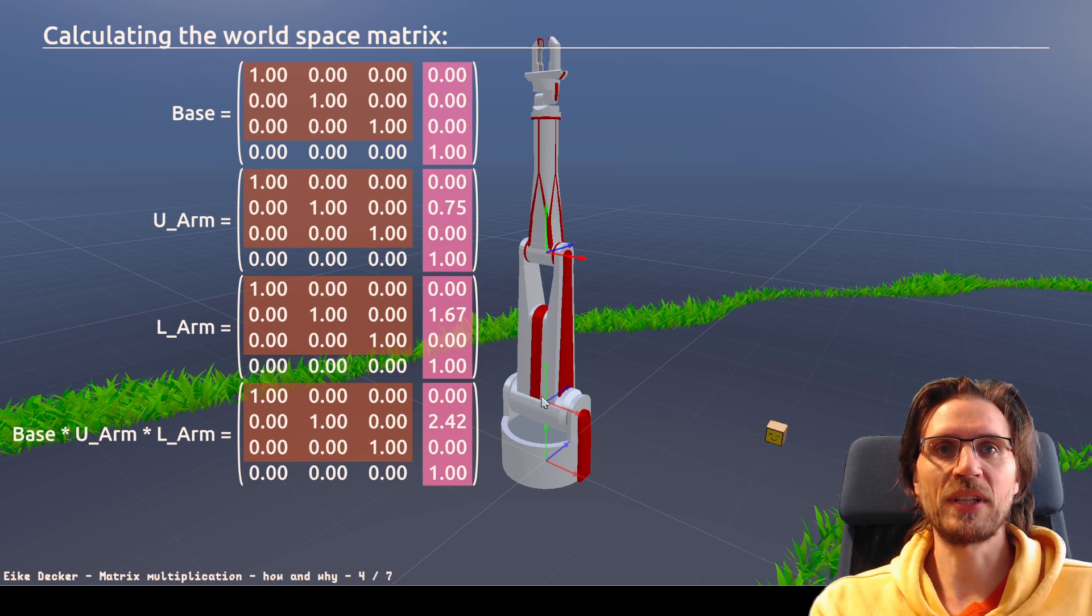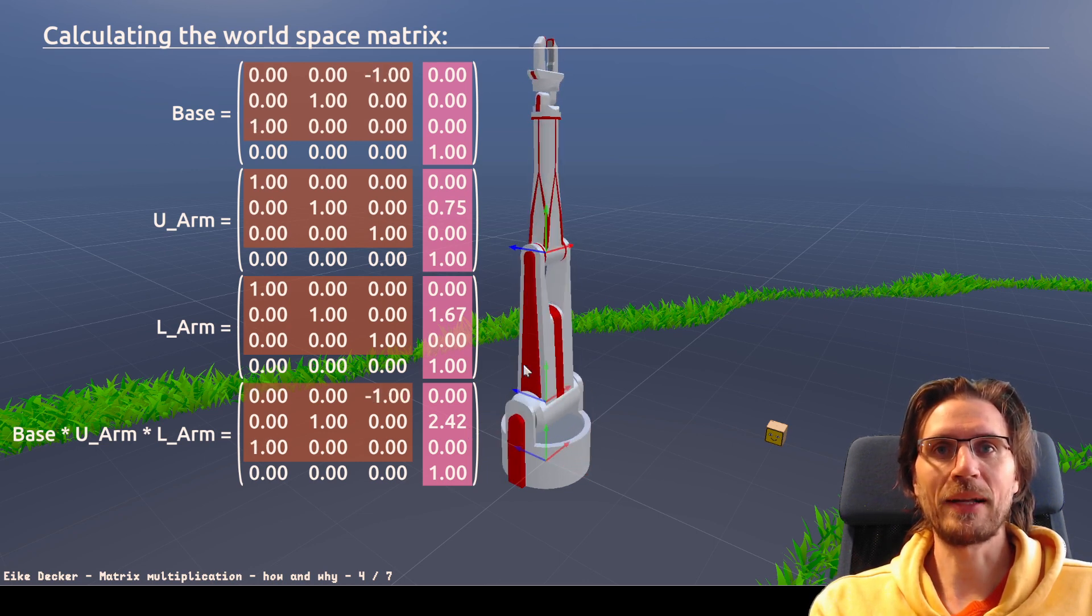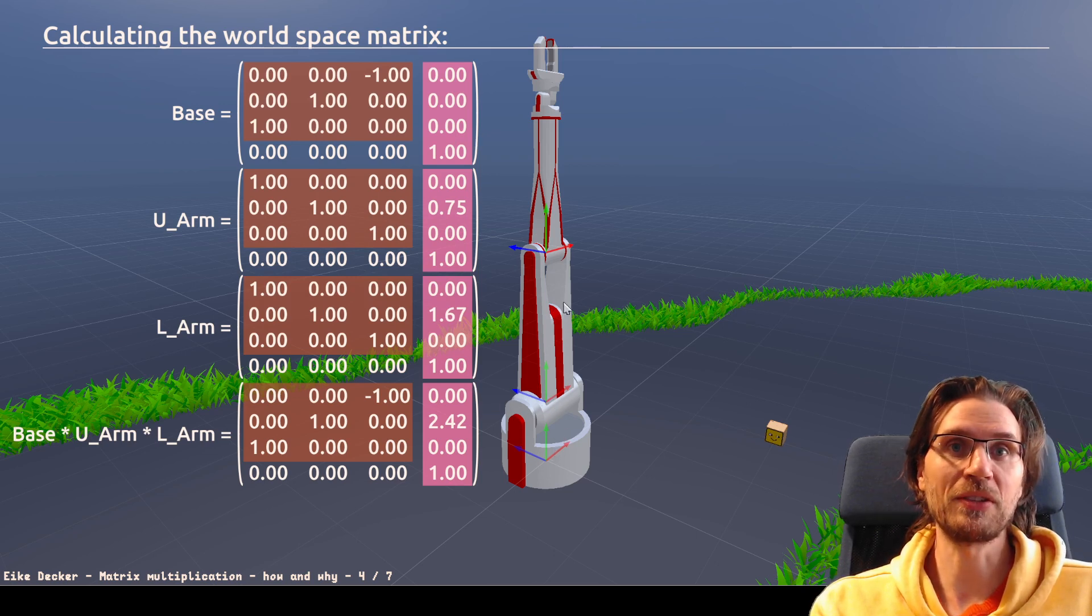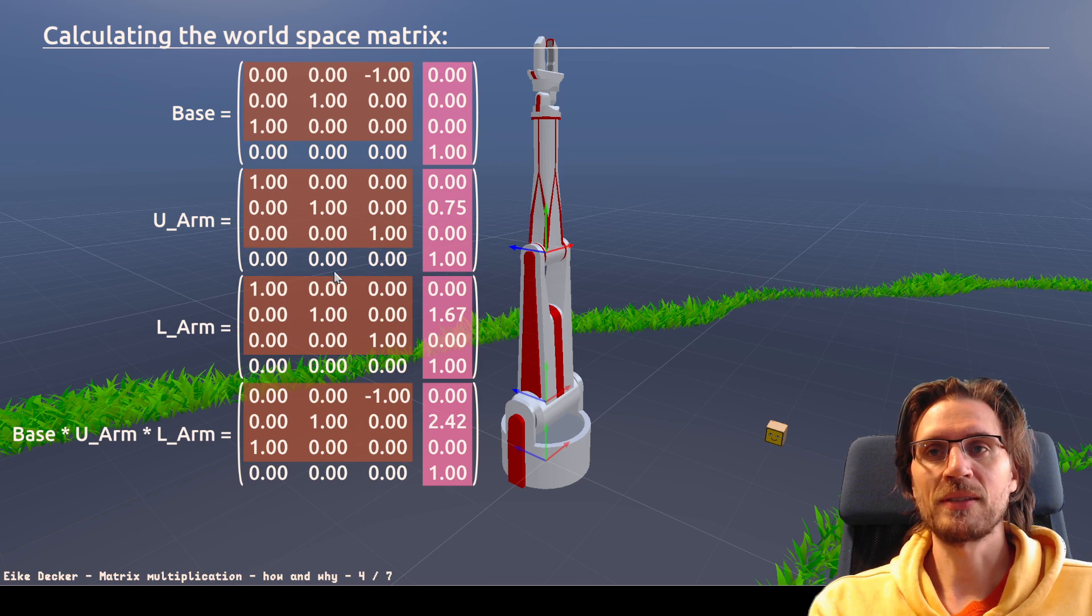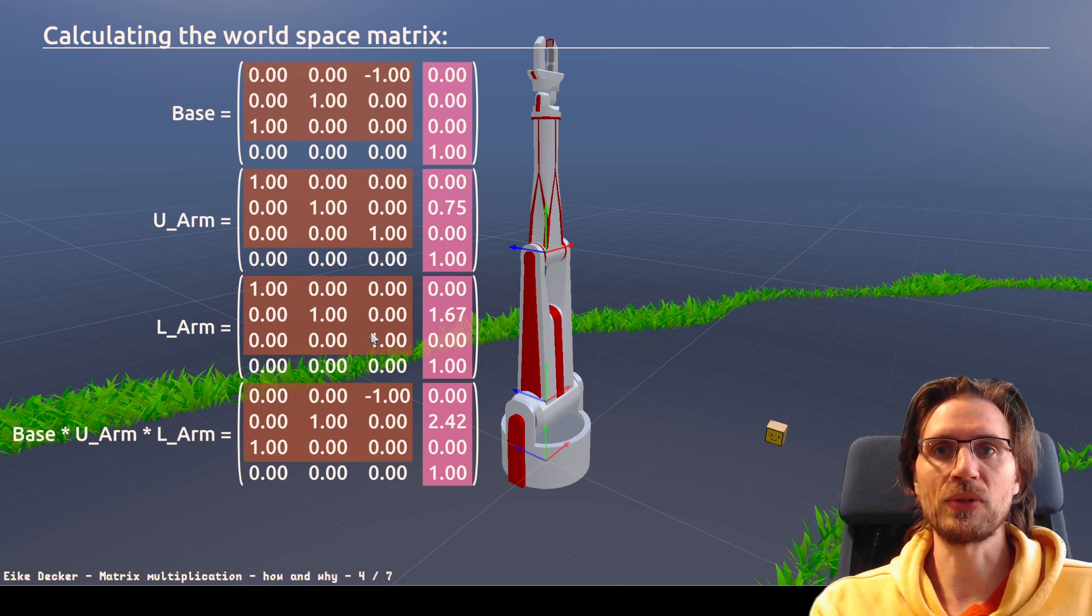This changes when we rotate it. And while the positions have not changed, because we didn't rotate it on an axis where this would happen, we see that the base rotation is being reflected in the result here. Since these are local space matrices, this has no effect here. Of course not.